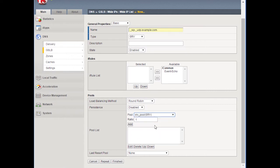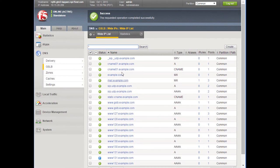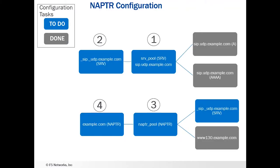We're going to use that SRV pool that we just created, go down here, and click finished. We can now see that underscore sip.udp.example.com of type SRV has been added. Let's go back to our diagram — we've created our SRV pool, added sip.udp.example.com as the member, and created the SRV wide IP in step two. Next, we're going to create the NAPTR pool and add some items to it.